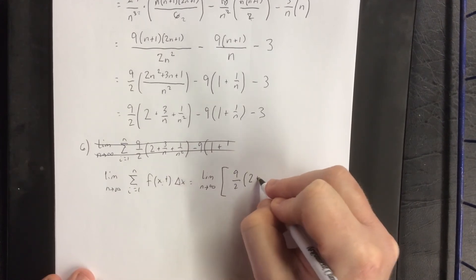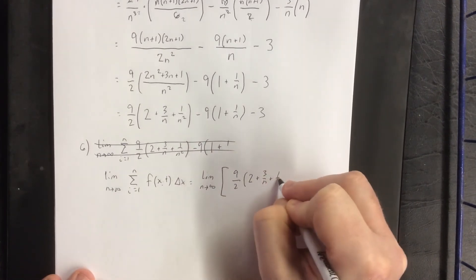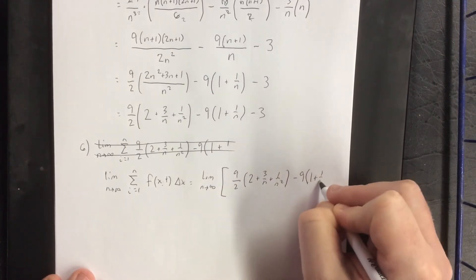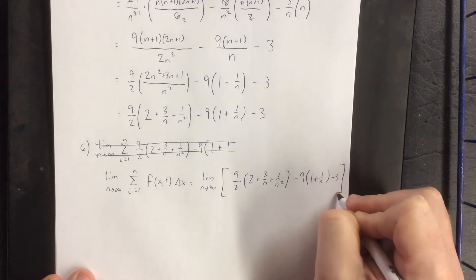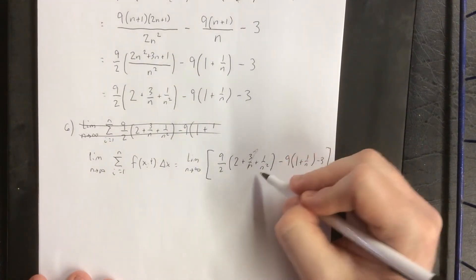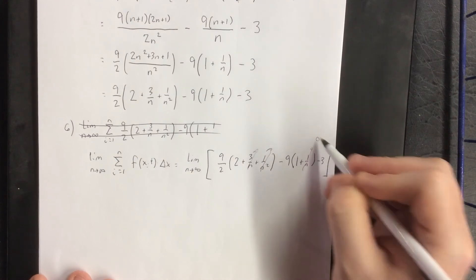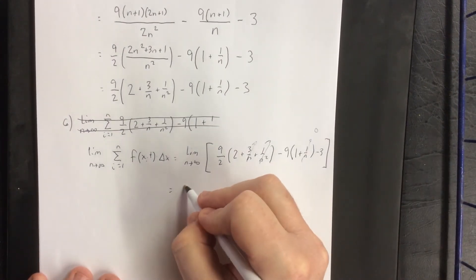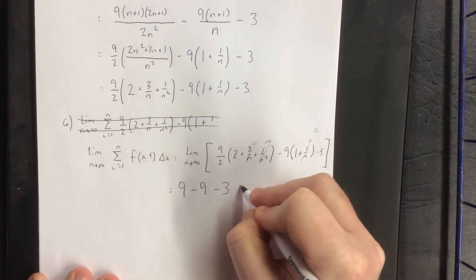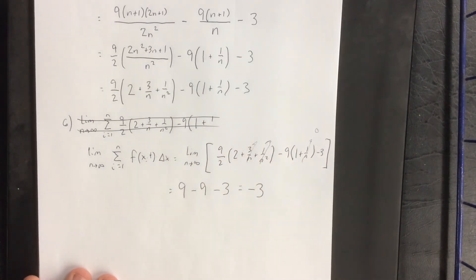So 9 halves times (2 plus 3 over n plus 1 over n squared) minus 9 times (1 plus 1 over n) minus 3. This goes to 0, this goes to 0, this goes to 0, and we are left with 9 halves times 2 minus 9 minus 3 for a final answer of negative 3.